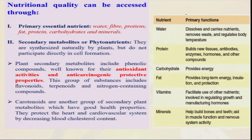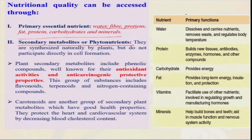Nutritional quality can be assessed through essential nutrients: water, fiber, protein, fat, carbohydrate, and minerals. Secondary metabolites — also called phytonutrients — are very important; they help in our body as defense precursors, always helping to fight different types of bacteria or viruses coming from the atmosphere. We always have to take these phytochemicals, and organic food is generally supposed to have a higher quantity of these nutrients. Secondary metabolites also have antioxidant and anti-carcinogenic properties.